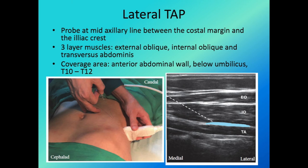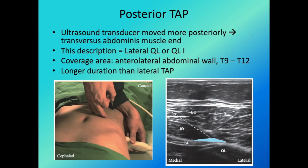For the lateral TAP block, place the probe at the mid-axillary line between the costal margin and iliac crest to see the classical three-layer muscle, and infiltrate LA between the internal oblique and transverse abdominis muscle. This is usually done for surgery below the umbilicus, such as caesarean section and hysterectomy. Sliding the probe further posteriorly and placing LA at the aponeurosis where the transverse abdominis muscle ends — above the quadratus lumborum muscle — gives the lateral quadratus lumborum block, also called the posterior TAP block. The main difference is the duration of analgesia.